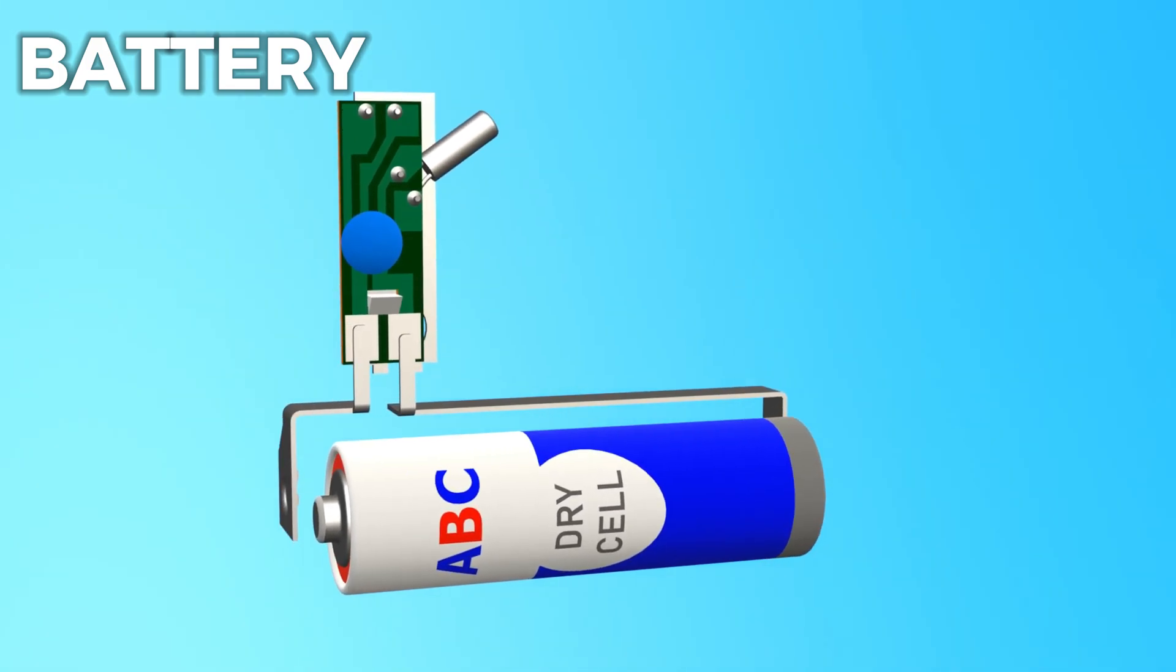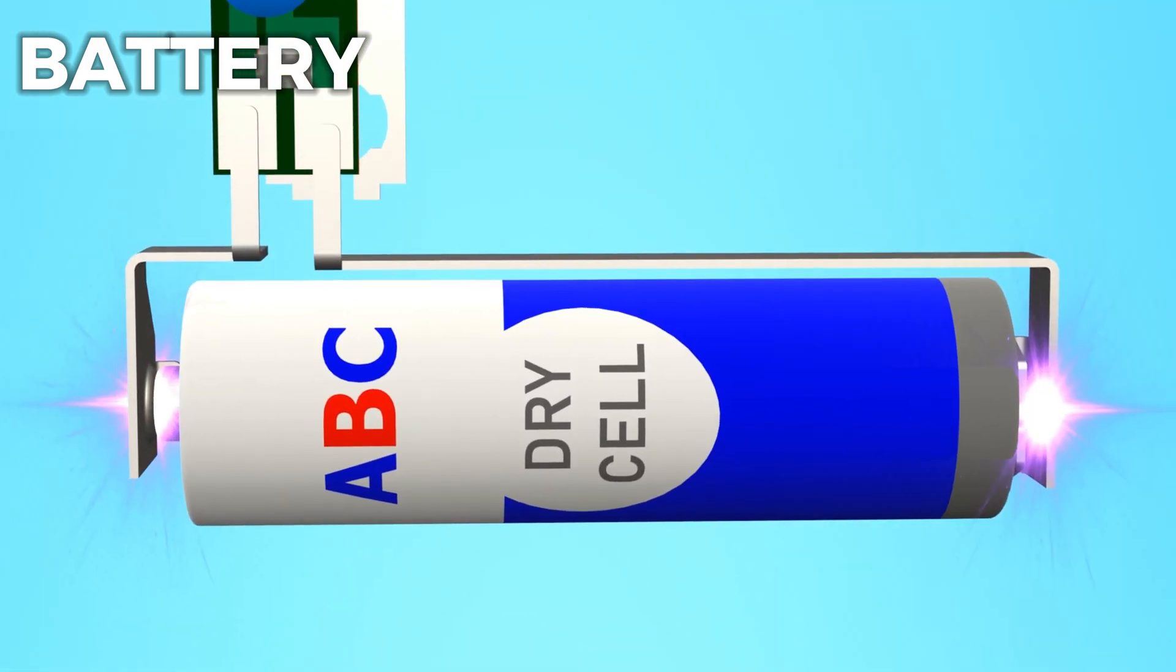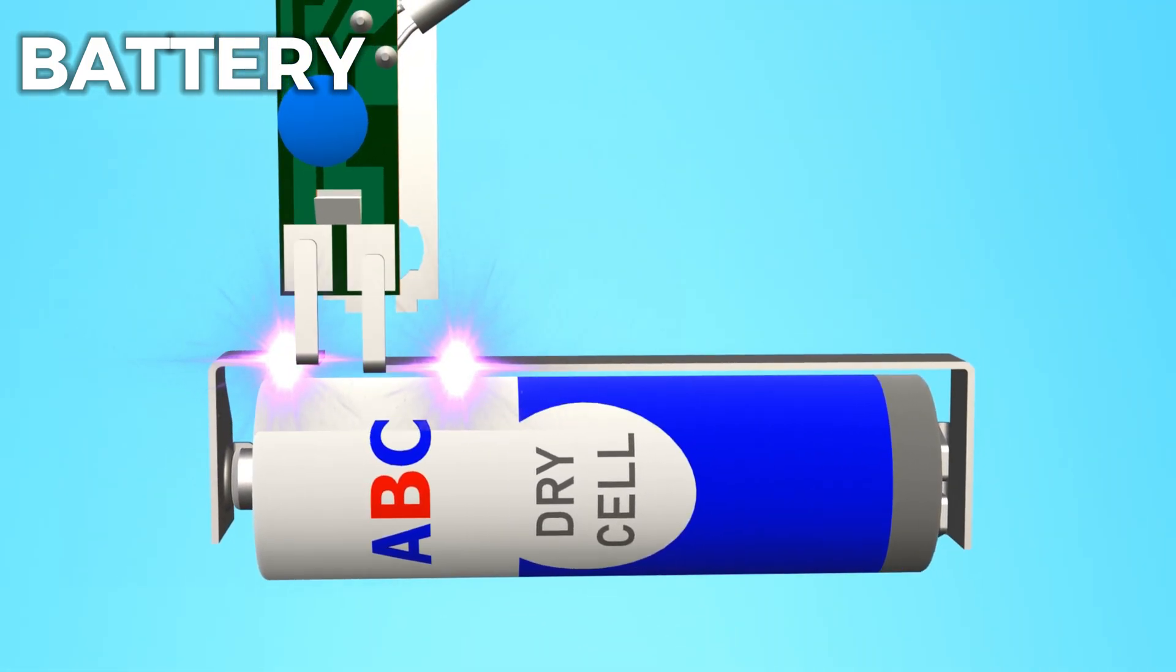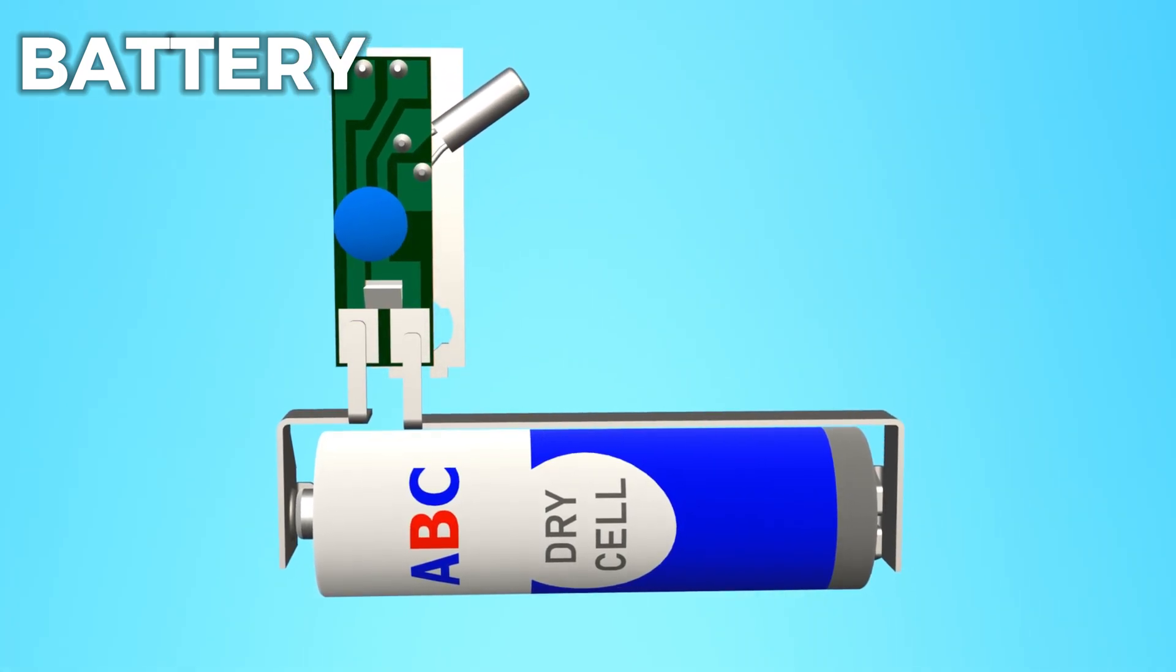Battery: The battery powers the entire clock mechanism. The battery provides the necessary voltage to keep the quartz crystal vibrating and the motor running.